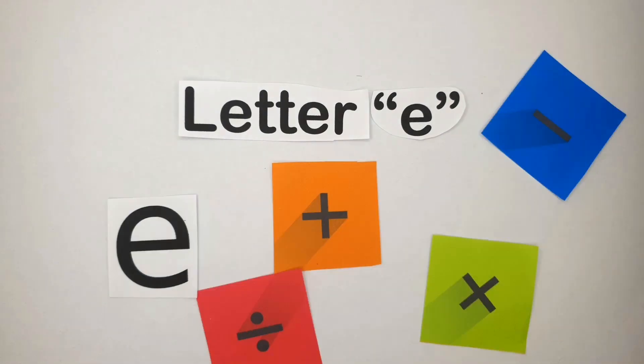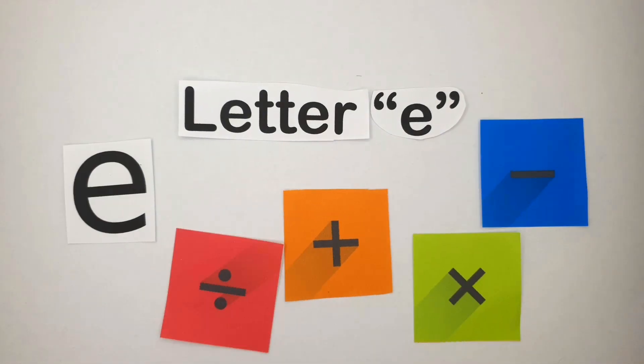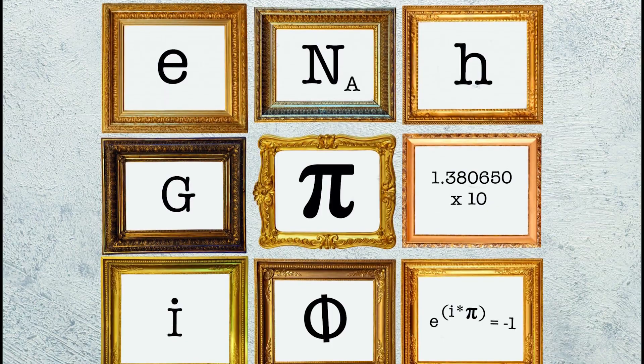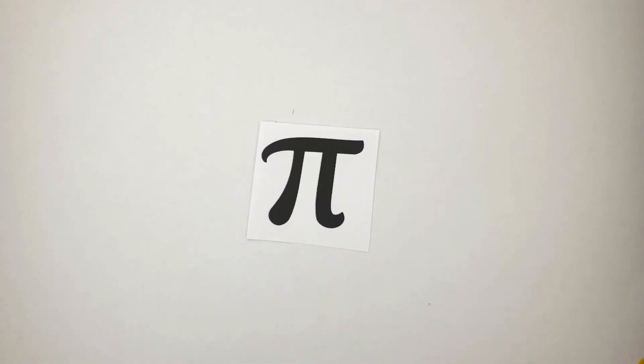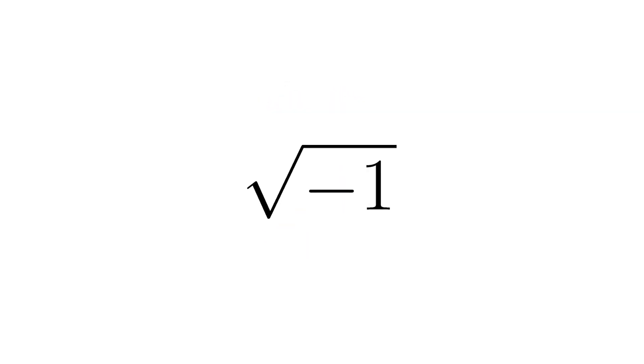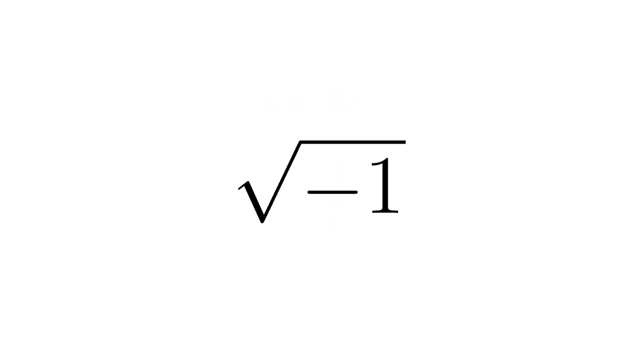Among the most important mathematical constants in the world are several notable ones, including the world-famous π, the modest but crucial number 1, the incredibly powerful value 0, and the strange but not less important i, the square root of minus 1.